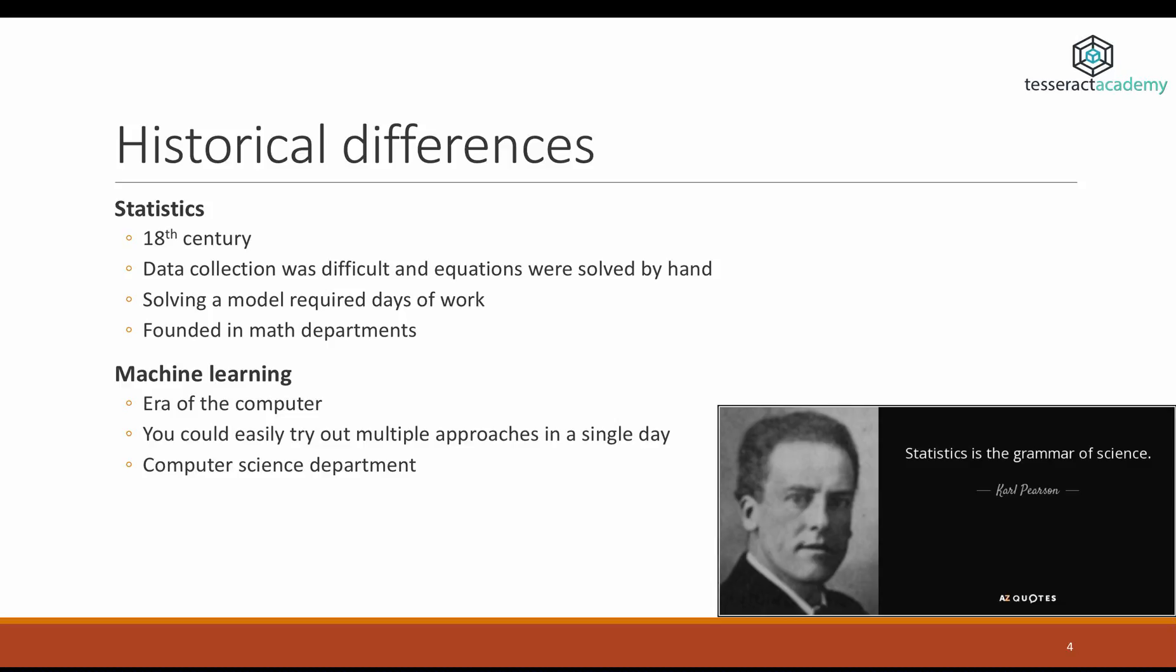A few more things about the historical differences between statistics and machine learning. Statistics was born in the 18th century, and let's put ourselves in that position. You're in the 18th century, and data collection is very difficult. You actually need to go there, ask people questions, or run experiments. There's no internet. Secondly, solving a model requires days of work. If any of you ever tried to solve a linear regression model by hand, you realize that it's very time-consuming and very easy to make mistakes.